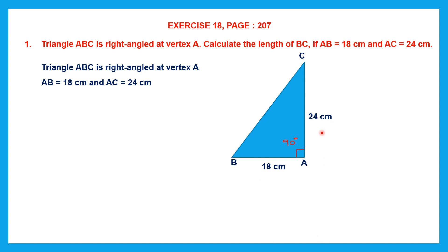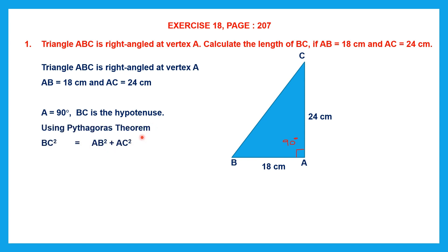AB is given as 18 centimeters and AC is given as 24 centimeters. In a right angle triangle, the side that is opposite 90 degrees — that is BC — is the hypotenuse. According to the Pythagoras Theorem, A is 90 degrees and BC is the hypotenuse. BC squared is equal to the sum of the squares of the other two sides: BC² = AB² + AC².